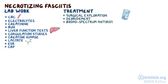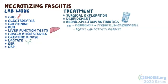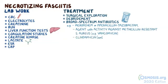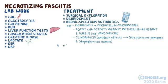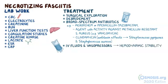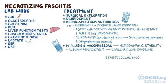In addition to early and aggressive surgical exploration and debridement, broad-spectrum empiric antibiotics should be given. For example, meropenem or piperacillin-tazobactam plus an agent with activity against methicillin-resistant S. aureus like vancomycin, plus clindamycin for its antitoxic effects, which can be effective against toxin-elaborating strains of Streptococcus pyogenes and Staphylococcus aureus. IV fluids and vasopressors may be needed to provide hemodynamic stability. Specifically, albumin replacement may be required in the setting of capillary leak syndrome, which is associated with streptococcal toxic shock syndrome.